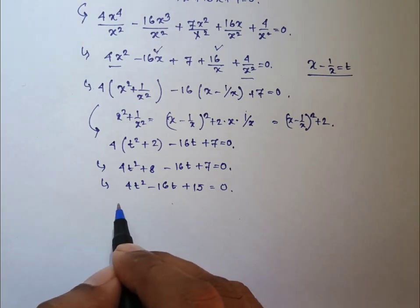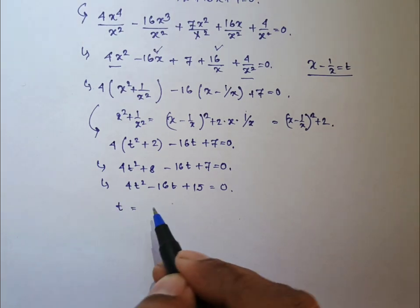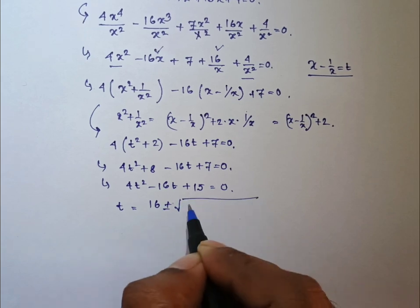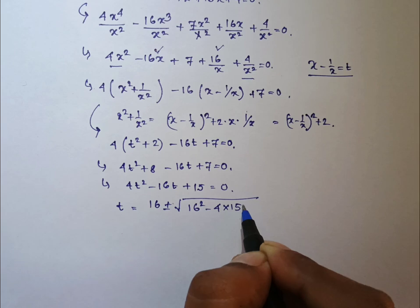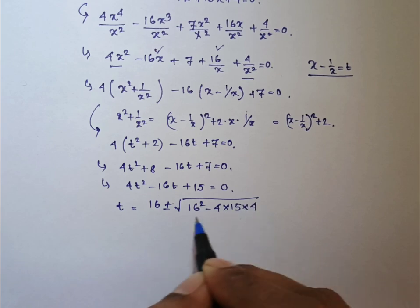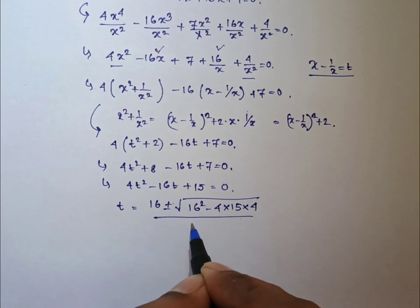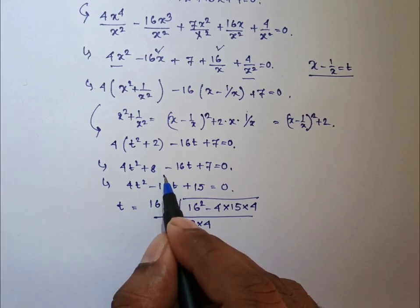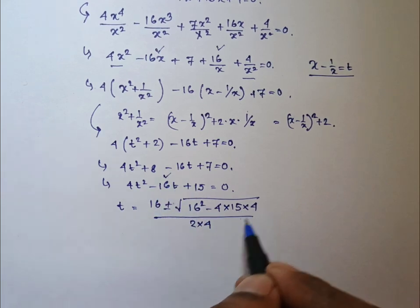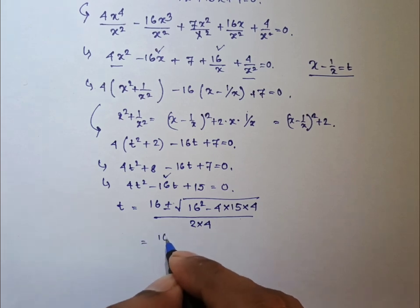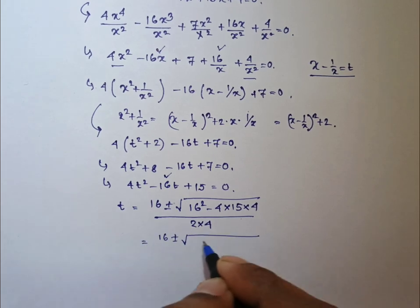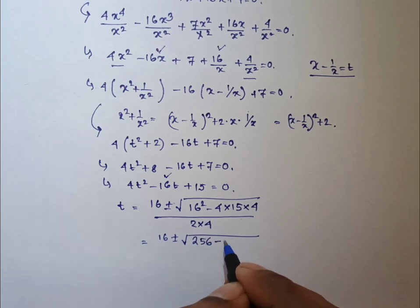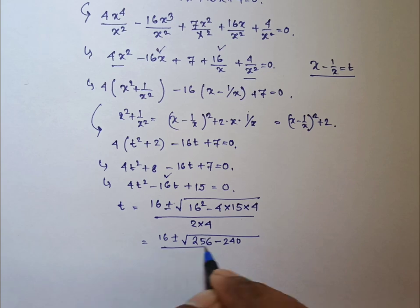Now from the formula of quadratic equation, t will be having two values: 16 plus minus square root of 16 square minus 4 into 15 into 4, whole divided by 2 into 4. That is, minus b plus minus root over b square minus 4ac by 2a. That is, 16 plus minus square root of 256 minus 240, whole divided by 8.